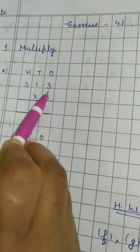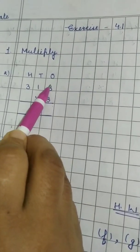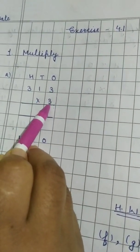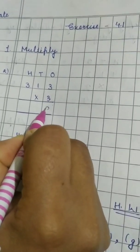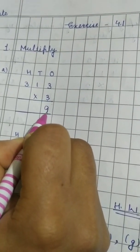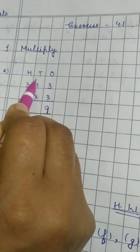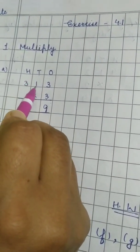Table of 3 we have to speak till this 3. 3 1's are 3. 3 2's are 6. 3 3's are 9. So here we will write 9. Now which digit's turn? The turn of digit at 10's place.